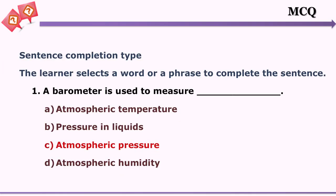Multiple choice questions can be formulated in different ways. One category is the sentence completion type, where the sentence is framed such that the learner needs to select a word or a phrase to complete the sentence. Here too you will notice that the options are very close to each other, making answering the question a little challenging for the learner.